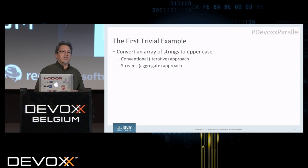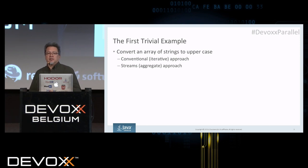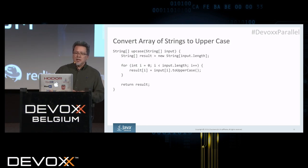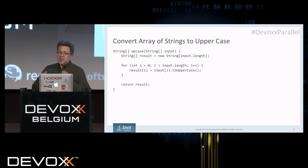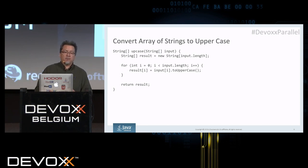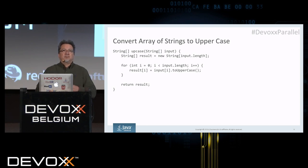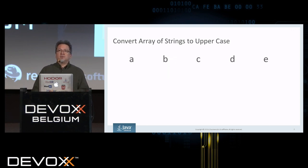I'm going to illustrate this with two trivial examples, going into fairly deep-dive analysis of each. This is the first trivial example: convert an array of strings to uppercase. I'm going to show this implemented two ways — first using a conventional or iterative approach, and second using streams or an aggregate approach. Here's the iterative approach. We get an input array, allocate an array for the result, then have a for loop that runs over the indexes from zero to the length, assigns the output by calling toUpperCase on each element of the input, and returns the result.